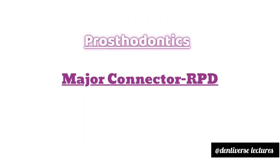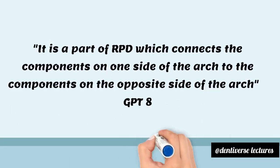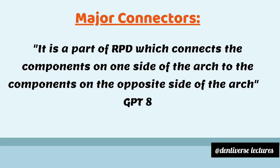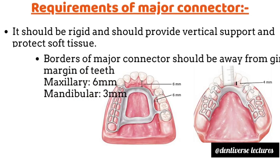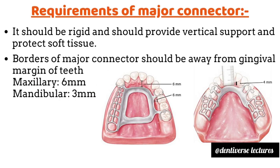Today we are going to discuss a topic from prosthodontics known as major connectors from RPD. According to GPT, a major connector is defined as a part of a removable partial denture which connects the components on one side of the arch to the components on the opposite side of the arch.